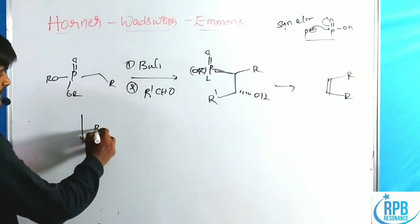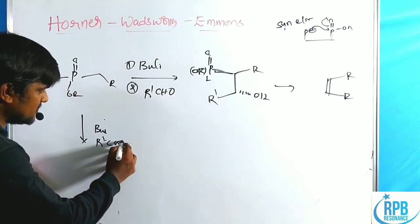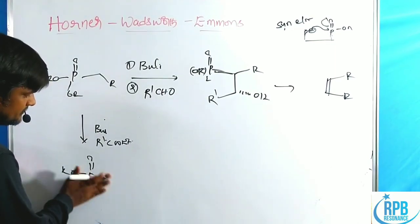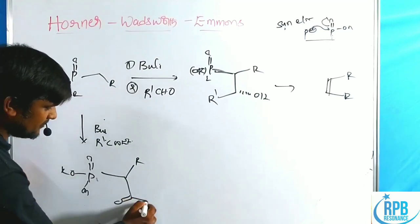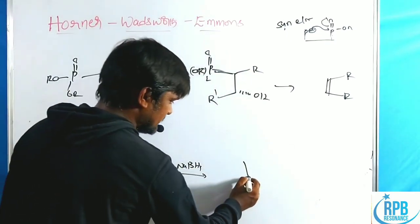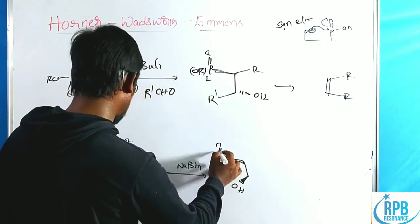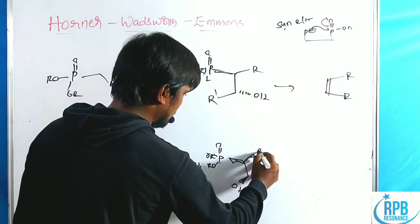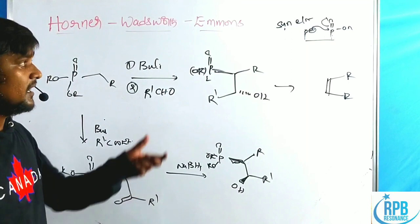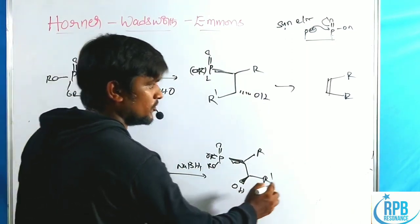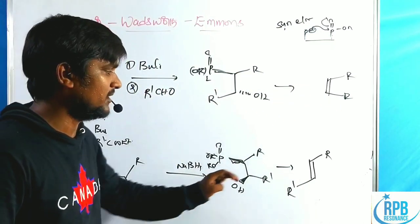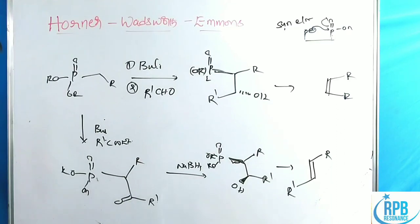When the phosphonate is treated with n-BuLi followed by R'-COOEt (ester), we get P=O, OR, OR with R and R' groups. Reduction with sodium borohydride gives an OH group. When both groups are on the same side, we get the same stereochemistry. Due to stereospecific syn elimination, one diastereomer gives Z product and the other gives E (trans) product as major. When this compound undergoes oxidation, it creates carbonyl compounds. These are stereospecific reactions regarding the HWE reaction.